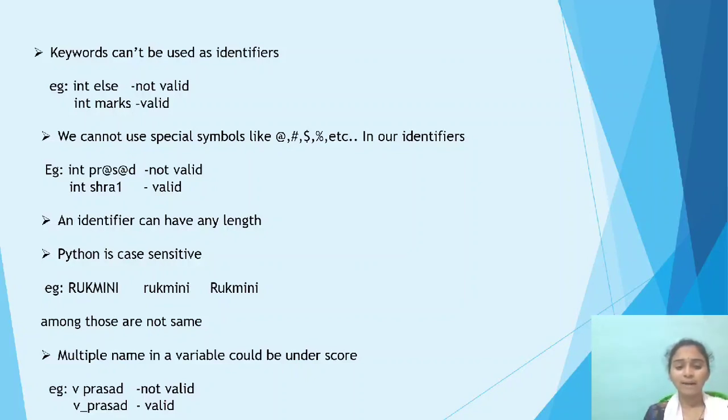And final one, multi-name in a variable could be underscore. Example, vprasad - not valid. v_prasad - valid.